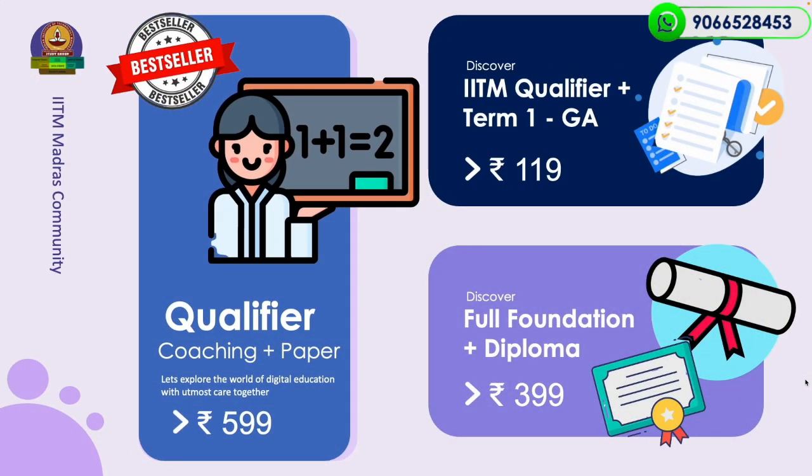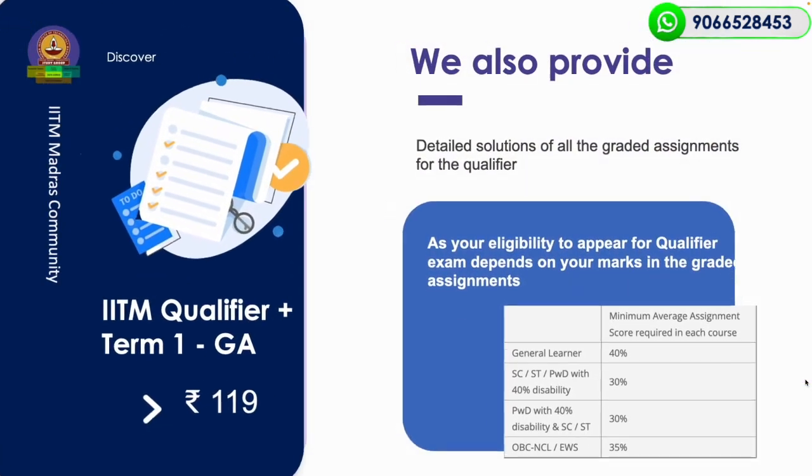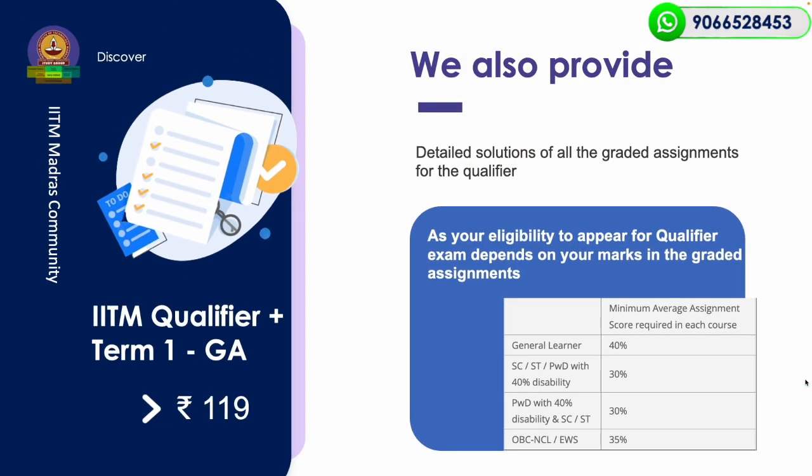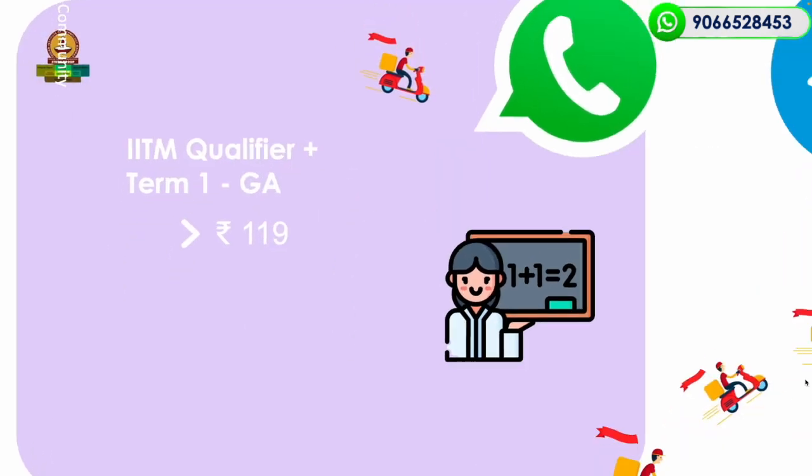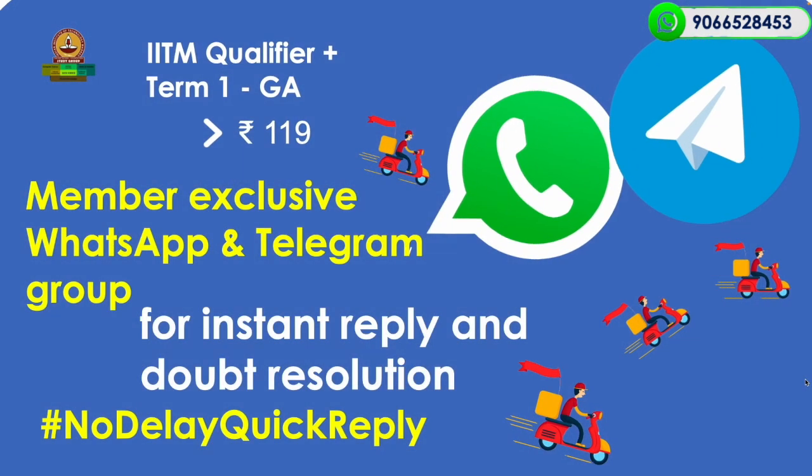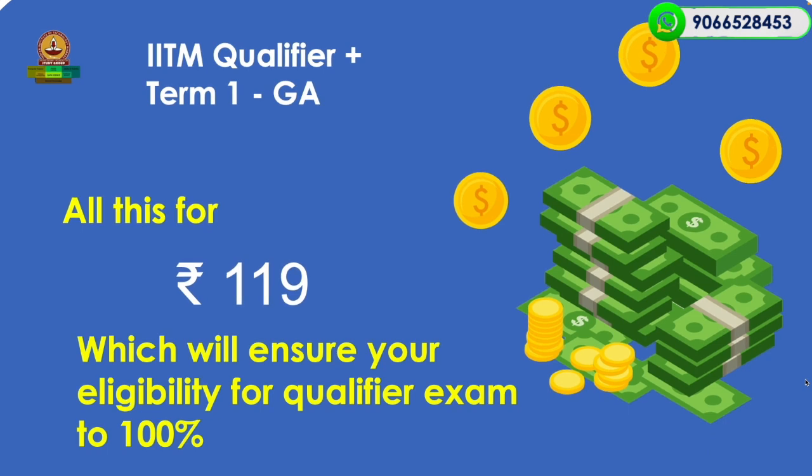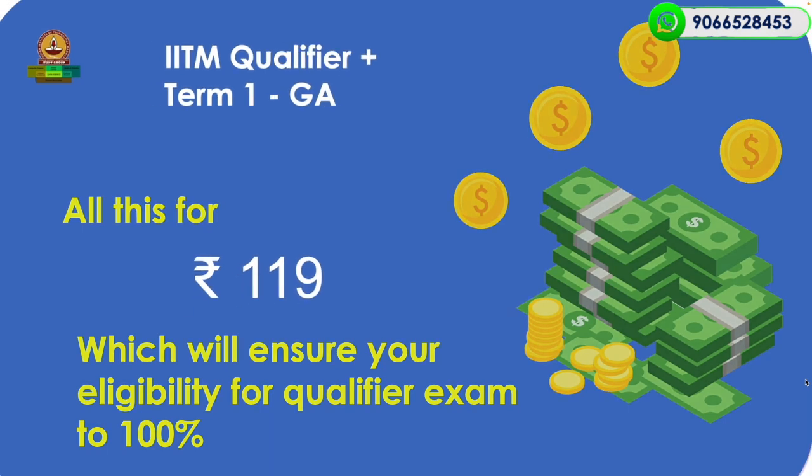We also have other plans. For Rs 119 we will provide detailed solution of all graded assignments for your qualifiers, as eligibility to appear for a qualifier exam depends on your marks in the graded assignments. One will also be added to member exclusive WhatsApp and Telegram group for instant reply and doubt resolution for just Rs 119, which is all it takes to confirm your hall ticket for the qualifier exam.